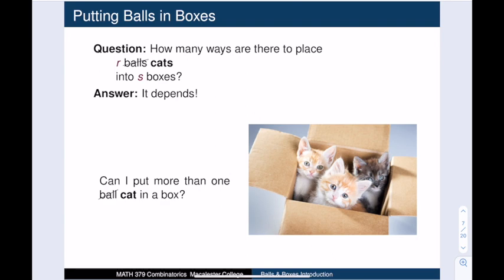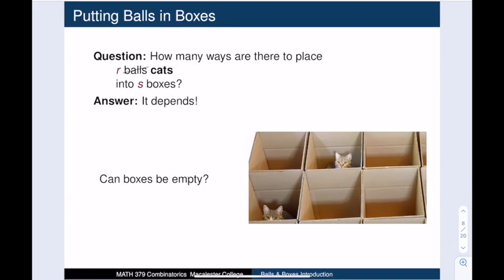The next two questions are about the rules of placement. Am I allowed to put multiple cats in the same box, or am I limited to at most one cat per box? And am I allowed to skip a box and leave it empty, or must every box get at least one cat?